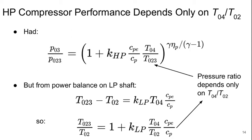Alright, the high pressure compressor performance, again, only ultimately depends on T0.4 over T0.2. So we have this equation at the top. But we can use the low pressure shaft power balance to relate T0.2.3 and T0.2. And that is itself a function of T0.4 over T0.2, but we can imagine putting this in and at the end of the day, P0.3 over P0.2 will only depend on T0.4 over T0.2.